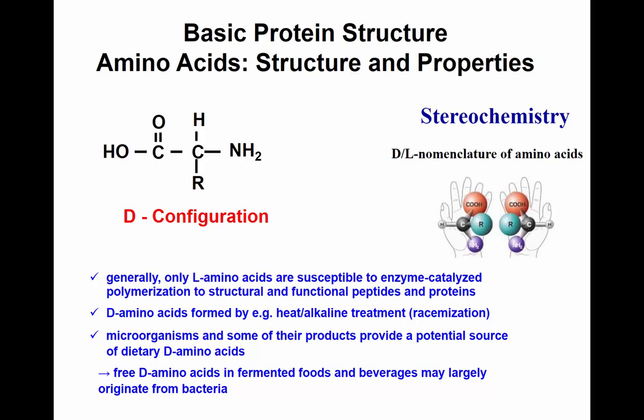The amine group can be to the right or to the left of the chiral carbon — we call this stereochemically different placement of the amine group. It's heat and alkali treatment, and microorganisms such as those in fermented foods and beverages originating mostly from bacteria, that cause this.